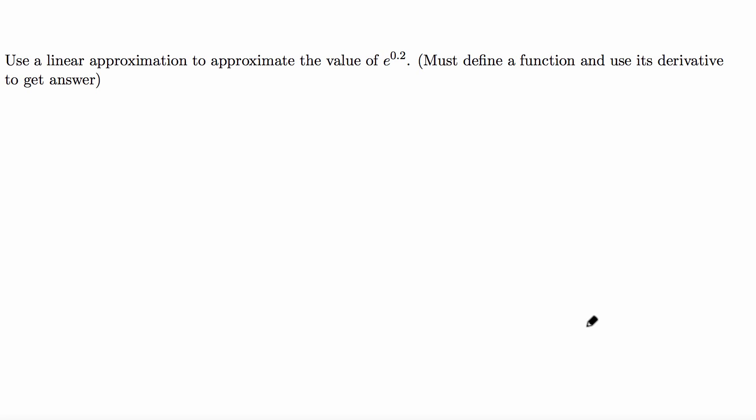Use a linear approximation to approximate the value of e raised to 0.2. The linear approximation for a function f(x) is given by this linear function L(x), which equals f(a), the function valued at the given number a, which is always a nice number, plus f'(a) times (x - a).